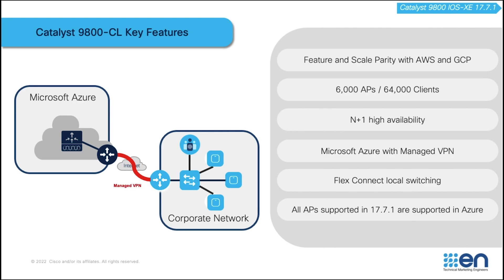In addition to that, all APs supported in 17.7.1 are supported with Catalyst 1900 CL on Microsoft Azure, including the newest Catalyst 9136 Wi-Fi 6E AP.